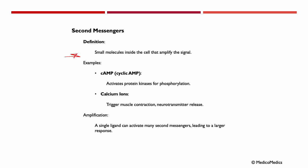Second messengers are small molecules inside the cell that amplify the signal. Examples of these are cAMP, cyclic AMP. It activates protein kinases for phosphorylation. We have calcium ions that trigger muscle contraction or neurotransmitter release. Amplification is a single ligand can activate many second messengers, leading to a larger response. If the receptors were like doorbells, you click on the doorbell you want to get in. Second messengers are like loudspeakers. They amplify the signal so the cell knows what to do.